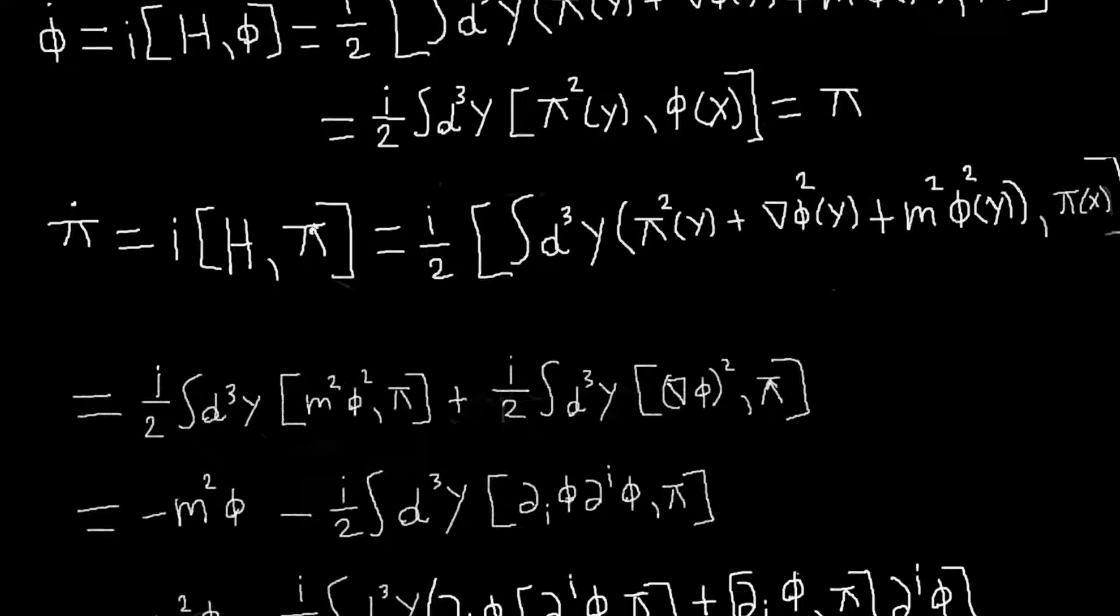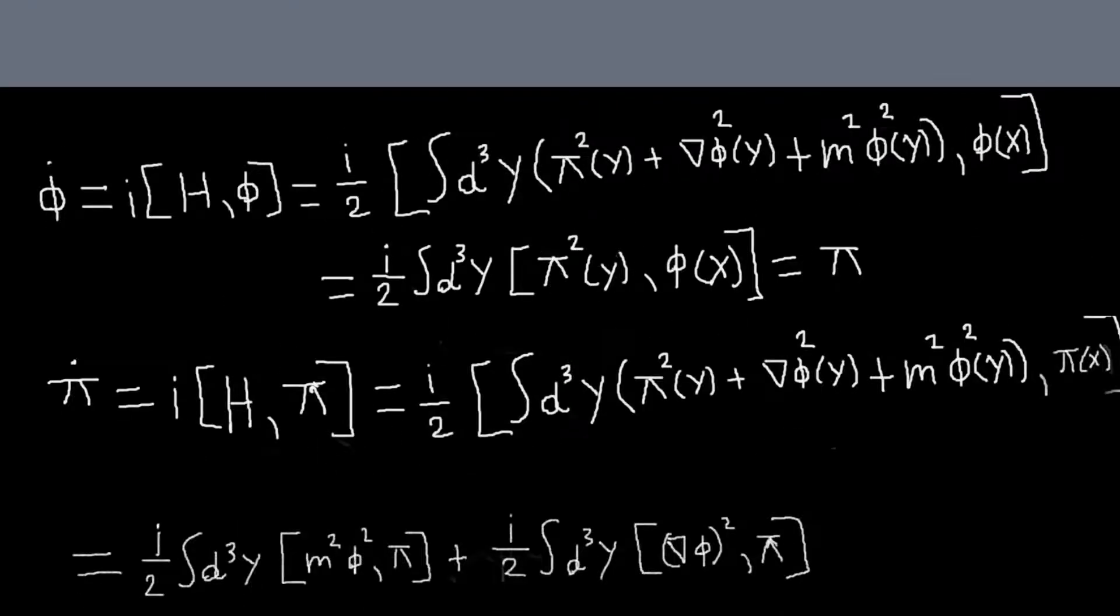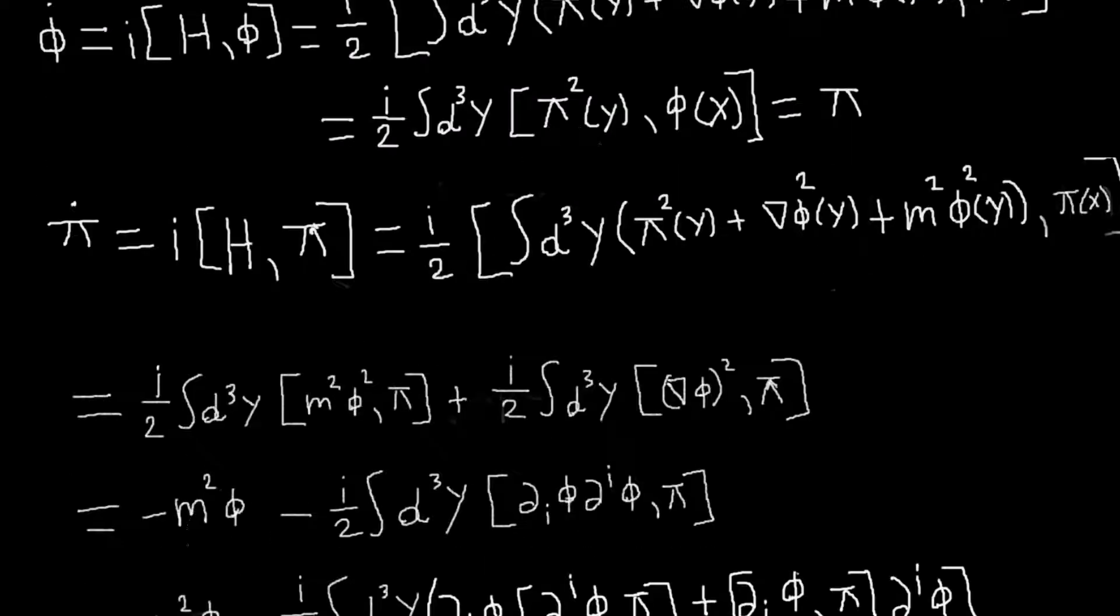And so this, the first term here, it works out, it's just as easy to calculate as this term here. And basically, I'll get an m squared 2i delta x minus y, so I'll end up with a minus m squared phi. But this term takes a little more work.